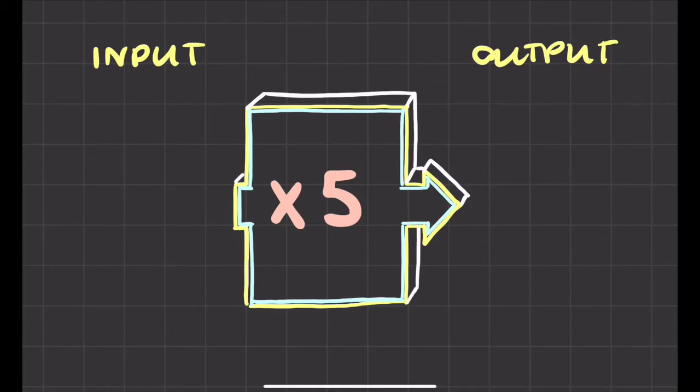So for here, for this function machine, you see it says times 5, so that means that any number I put in I've got to times it by 5. So let's say I put in the number 2. 2 times 5 is making 10, so my output is 10. Could try a different number, could put any number I want into my number machine. Let's try the number 3.